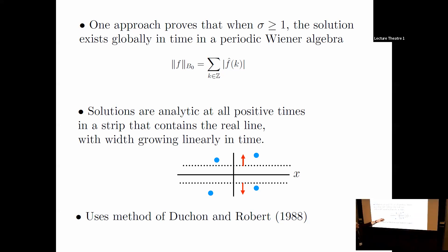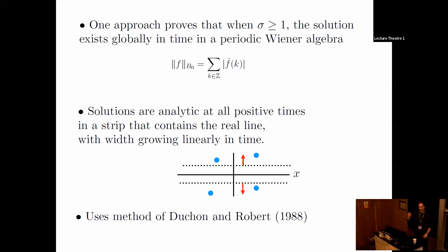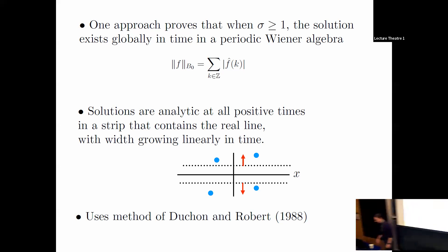This uses a method of Duchon and Robert, originally developed for the vortex sheet problem, the Kelvin-Helmholtz problem, to show global existence for certain data. That's an elliptic problem, but it's been adapted to the parabolic problem we have here.